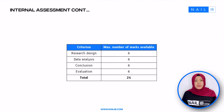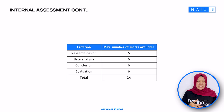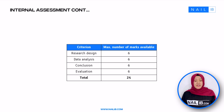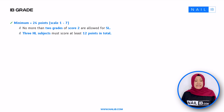The written lab report will be externally moderated by the IB based on four criteria: research design, data analysis, conclusion, and evaluation. Each criterion has a maximum score of six, and the total is 24. How to achieve that total score of 24 for your written lab report will be discussed in a different video specifically about internal assessment.